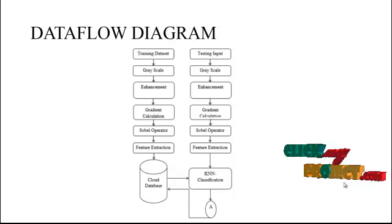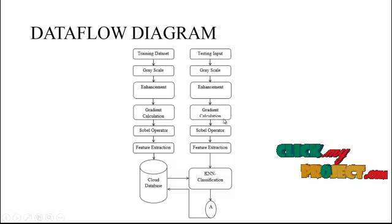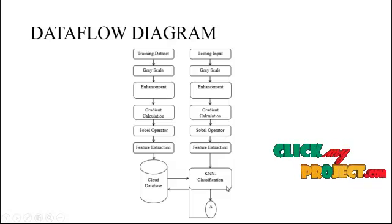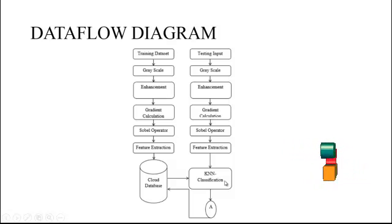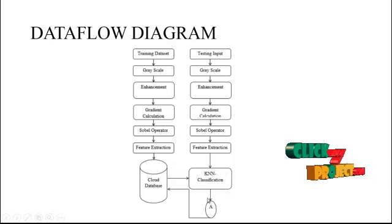For the testing database, after the testing image is input, the grayscale enhancement process is carried out, followed by gradient calculation, the Sobel operator, and then feature extraction. After that, the KNN classification method is applied, and the results with final analysis are provided.